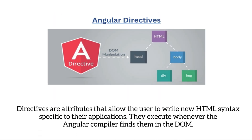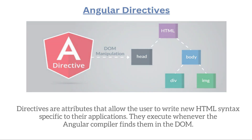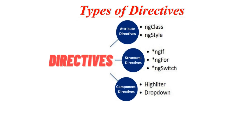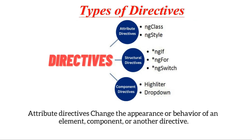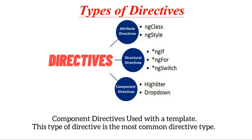Directives are attributes that allow the user to write new HTML syntax specific to their applications. They execute whenever the Angular compiler finds them in the DOM. Angular supports three types of directives: attribute directives, which change the appearance or behavior of an element or component; structural directives, which change the DOM layout by adding and removing DOM elements; and component directives, used with a template — the most common directive type.